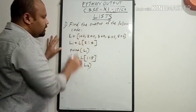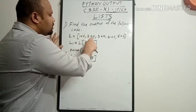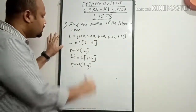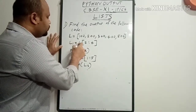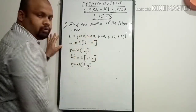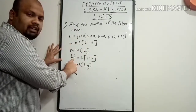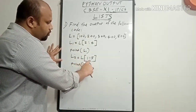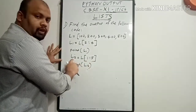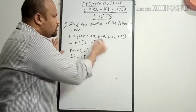Find the output of the following code. L is equal to — this is a list declaration — L = [100, 200, 300, 400, 500]. Then L1 is equal to L[2:4] and we print the value of L1. After that, L2 is equal to L[1:5] and we print the value of L2.